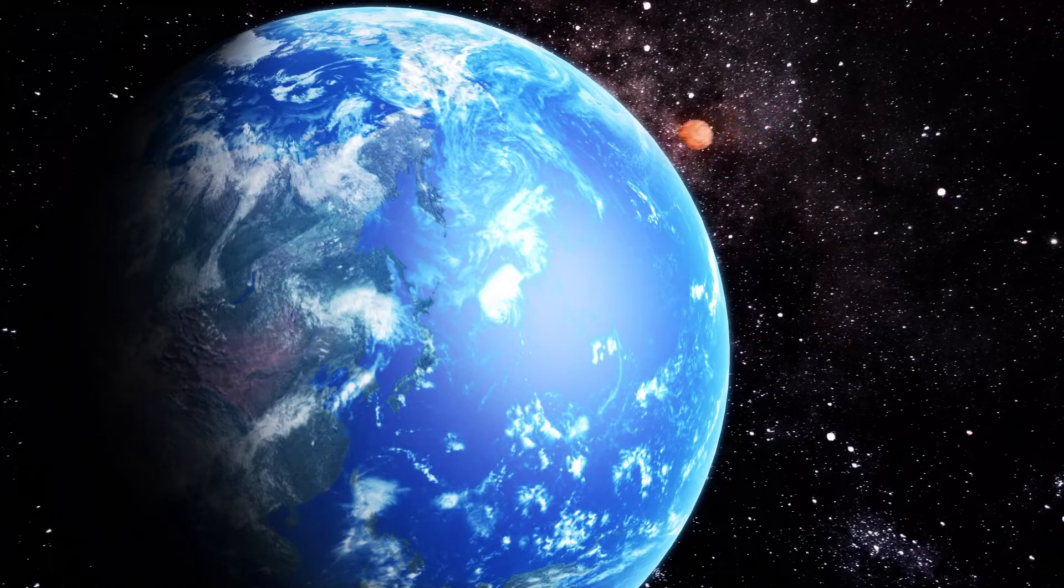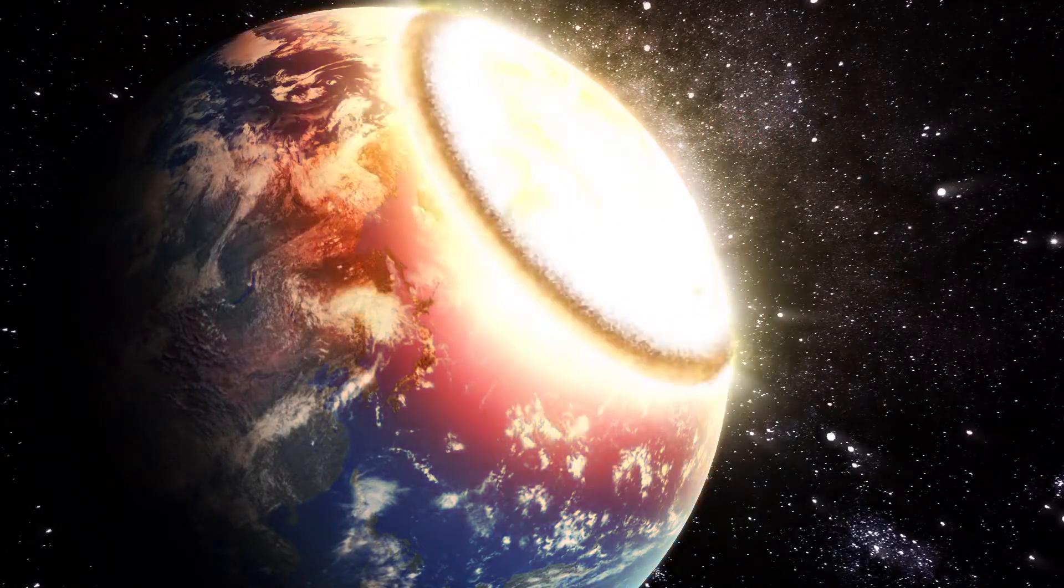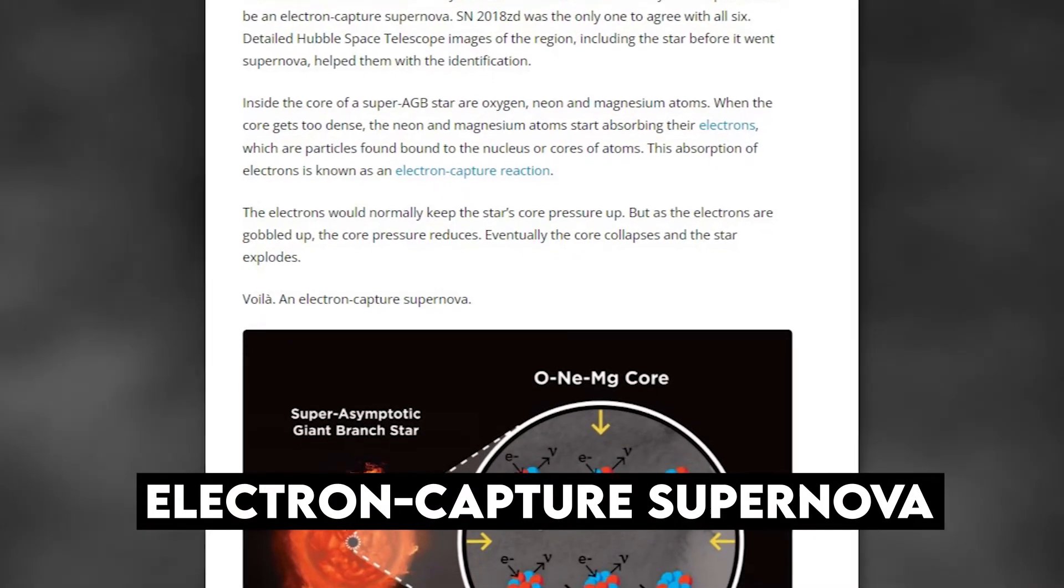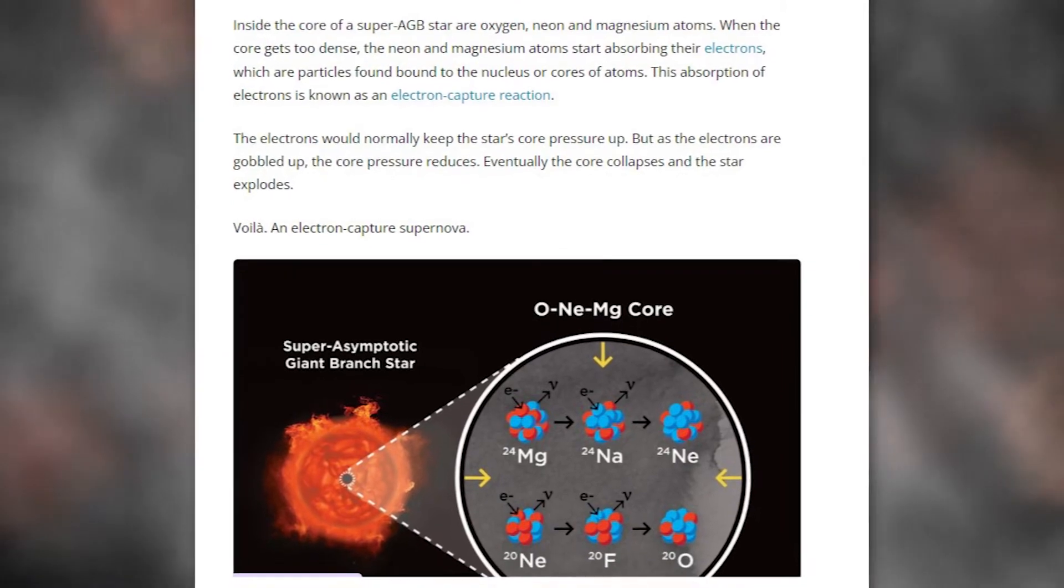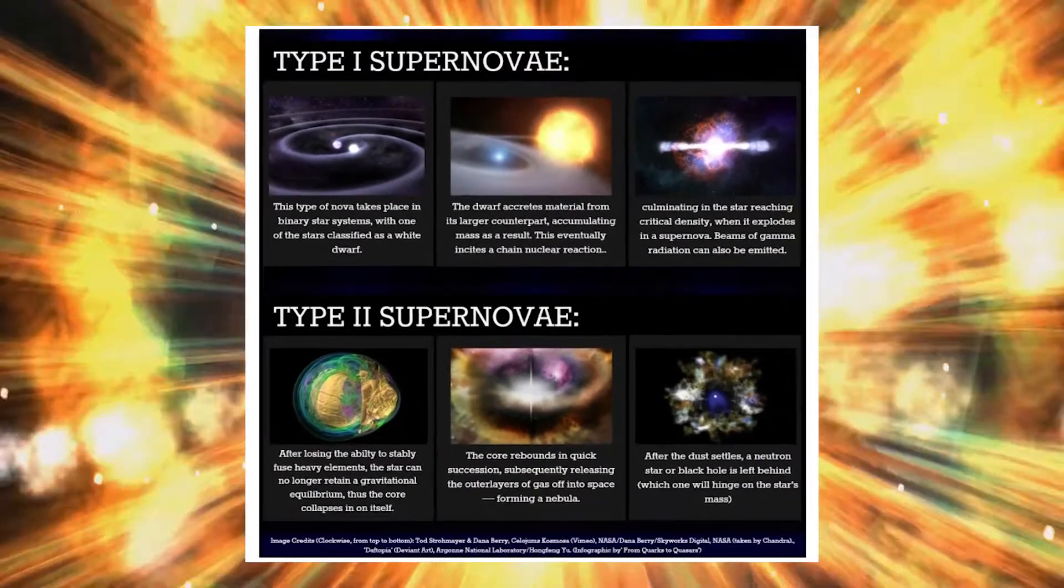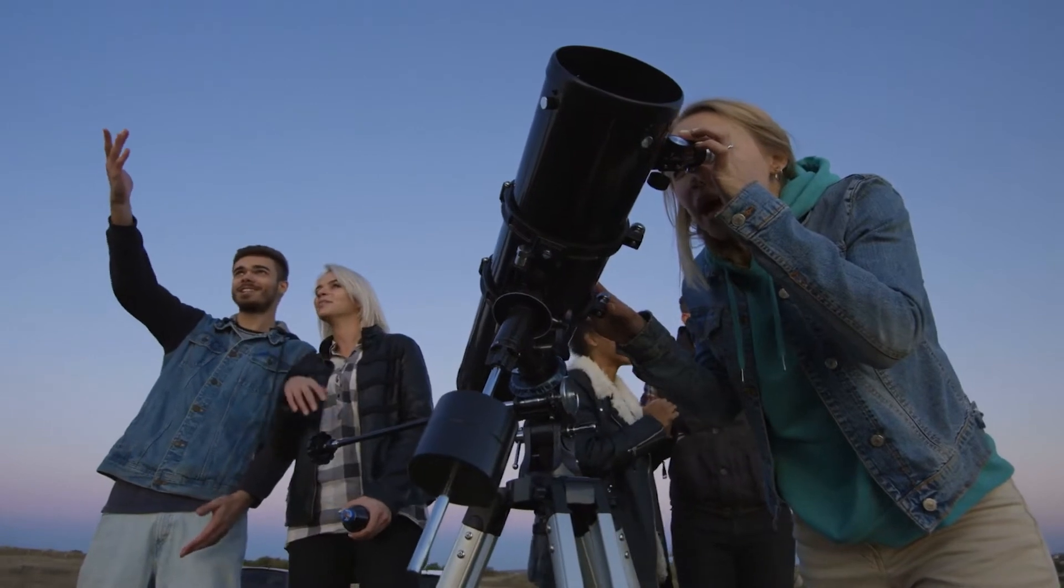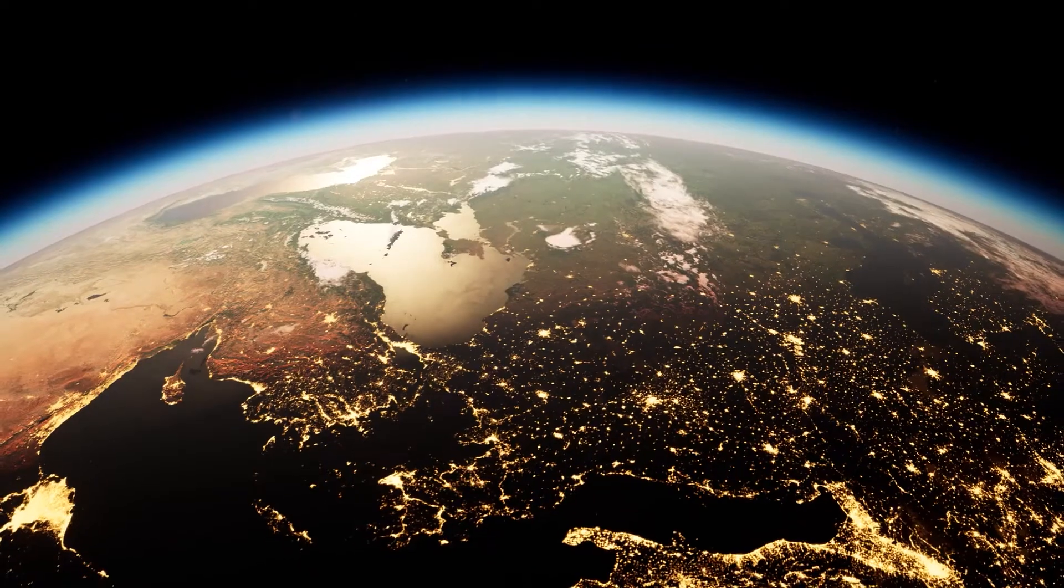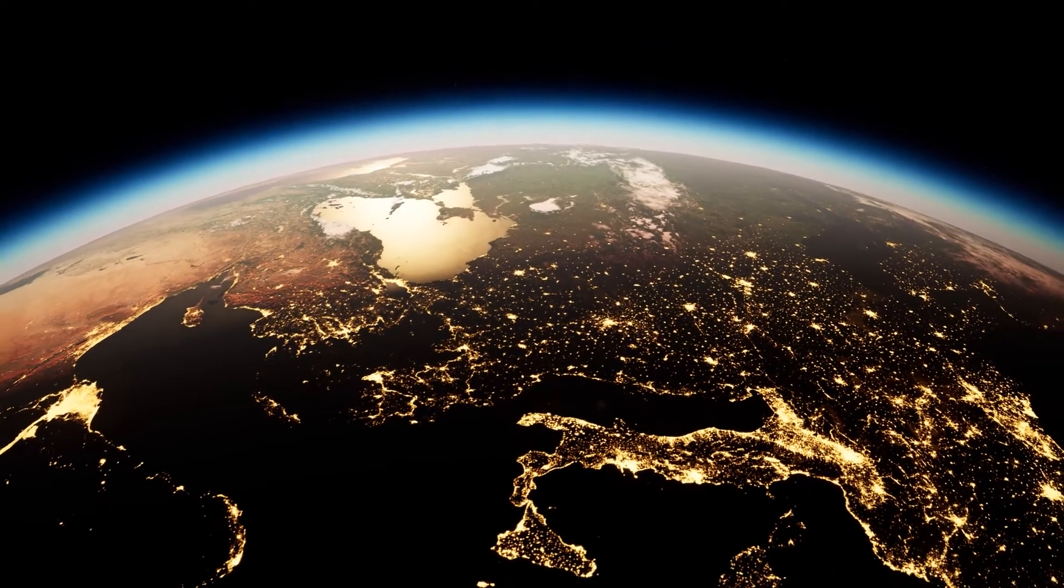However, there's also a third type of supernova called the electron capture supernova, which sits on the borderline between the other two types of supernovae. For decades, it has been hypothesized by astronomers and scientists, but has never been observed in the real world.